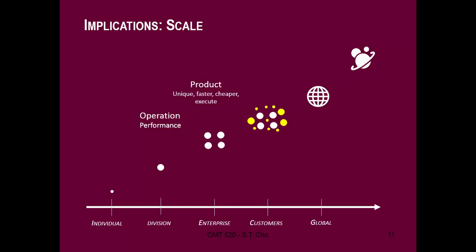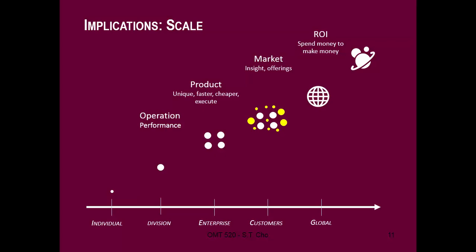Technology can make us better. Our products can be unique, faster, and cheaper. In terms of marketing, we have greater insight than we've ever had into what customers want. Once it becomes mature, you get into an ROI situation — meaning I can spend money and make money because I'm going to get a positive return on it. All these pieces have to play together. If you can make them all come together, that's how you build powerful digital networks. The game is about integration.